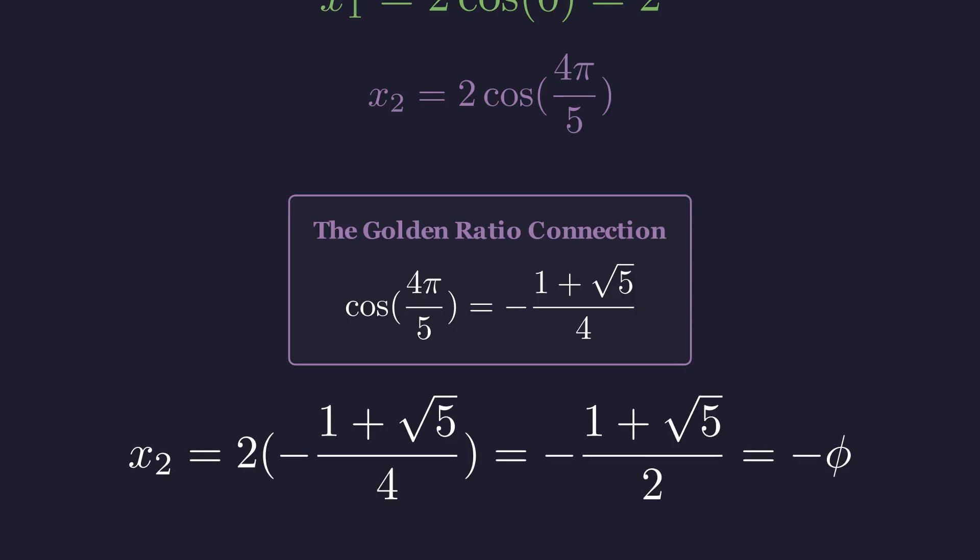Substituting this exact value, when I multiply by 2, the 4 becomes a 2, and I get negative 1 plus the square root of 5 over 2. That's negative phi, the golden ratio.